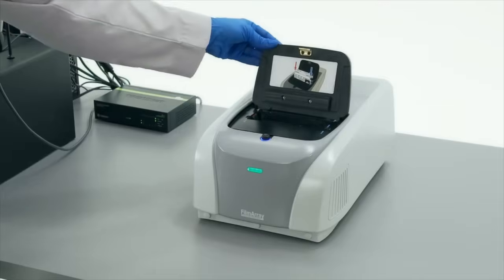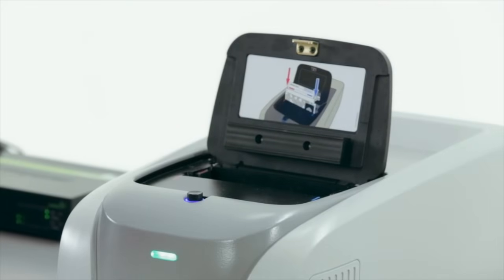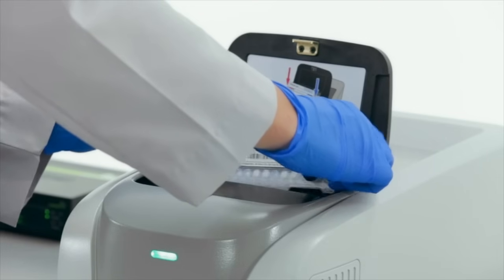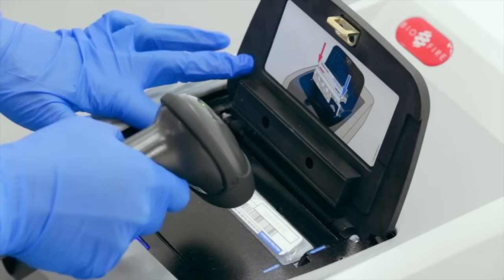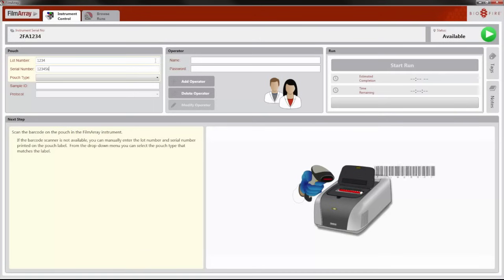The film array instrument is now ready to set up. The film array pouch is loaded into the film array instrument and a barcode reader is used to enter the pouch ID. The sample ID can also be scanned with the barcode reader or entered manually.